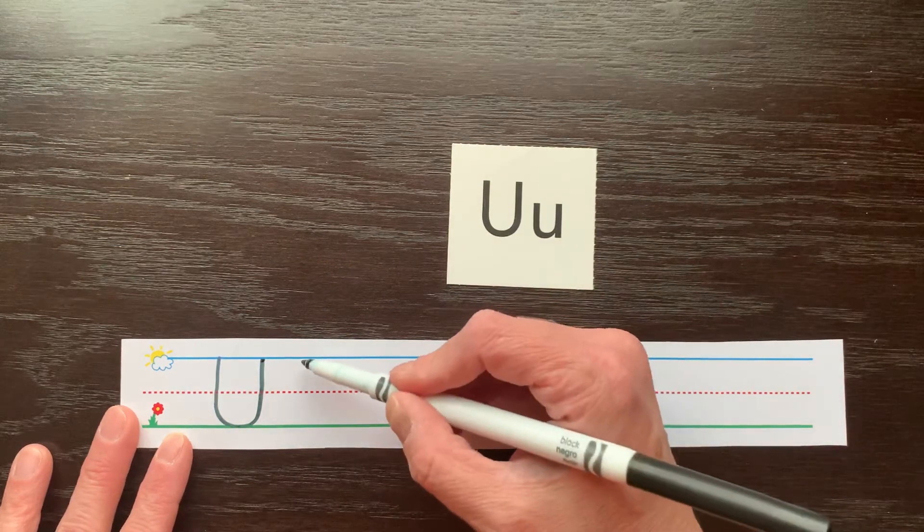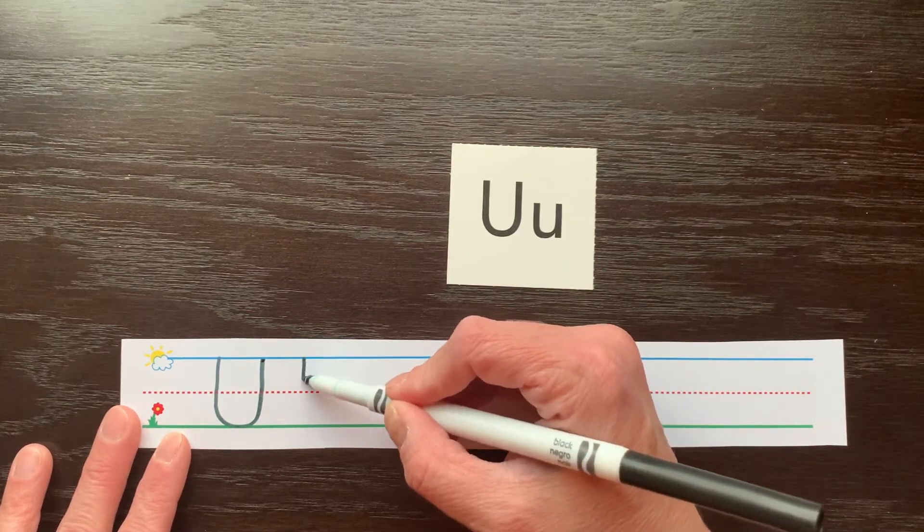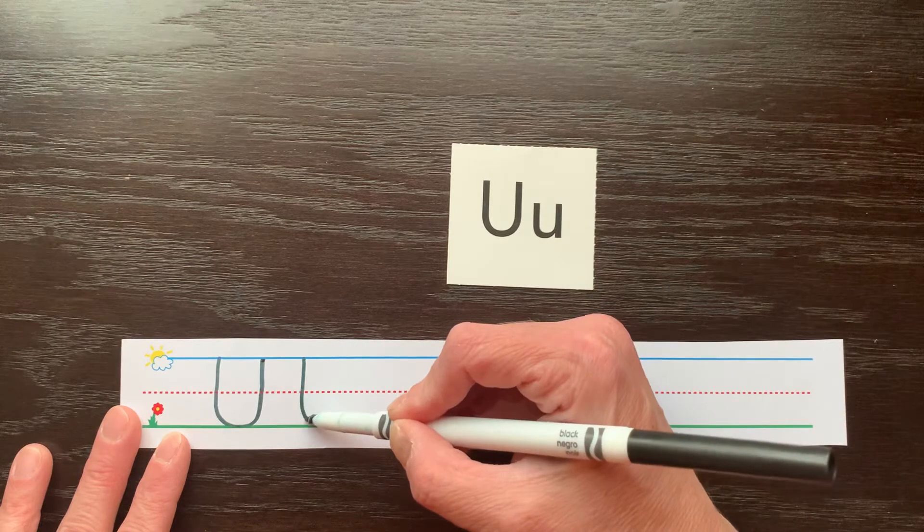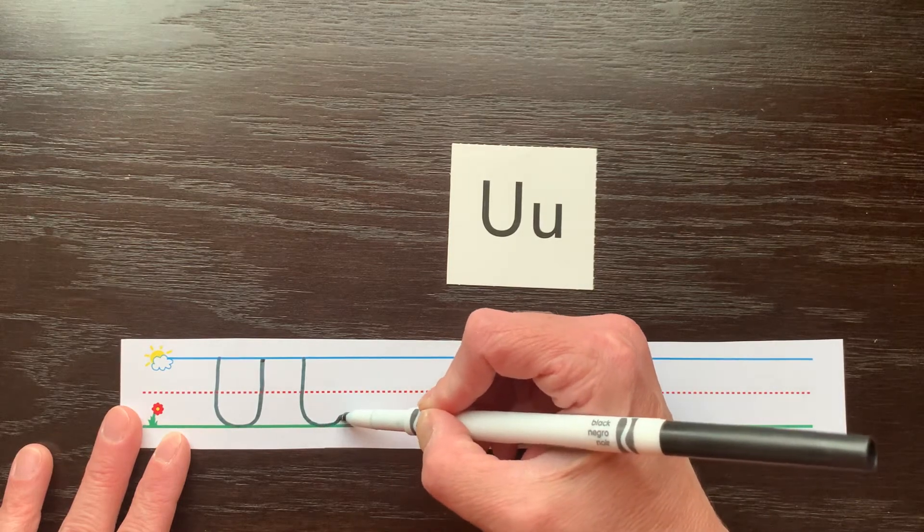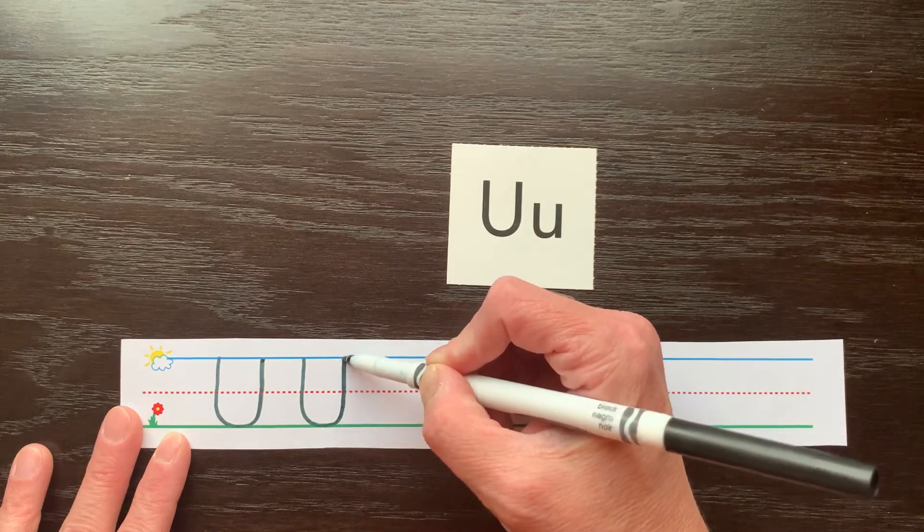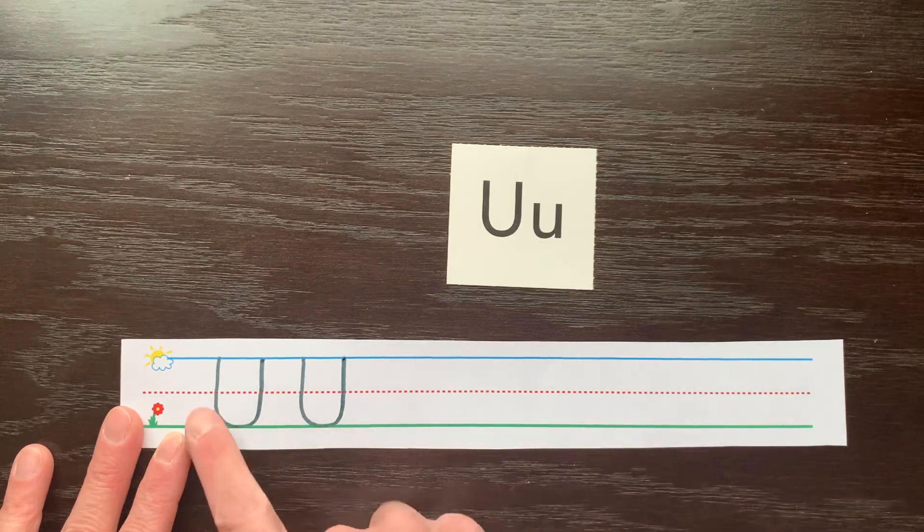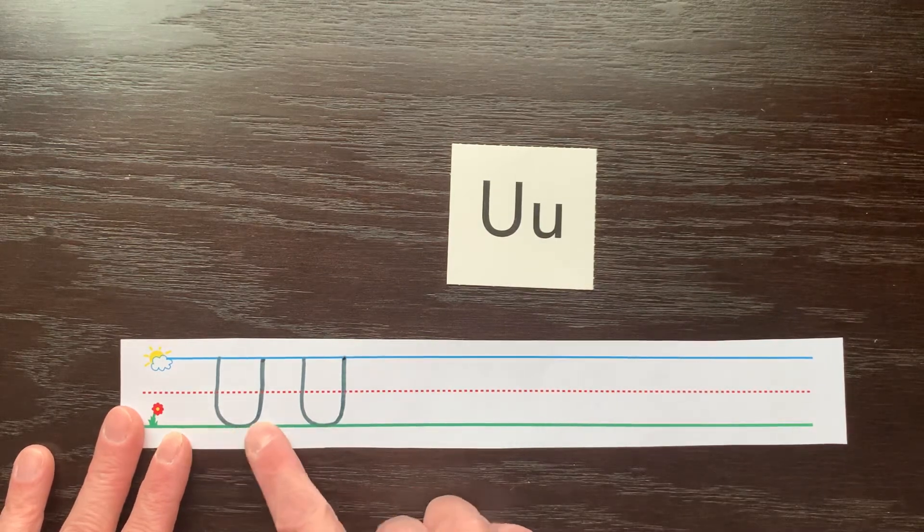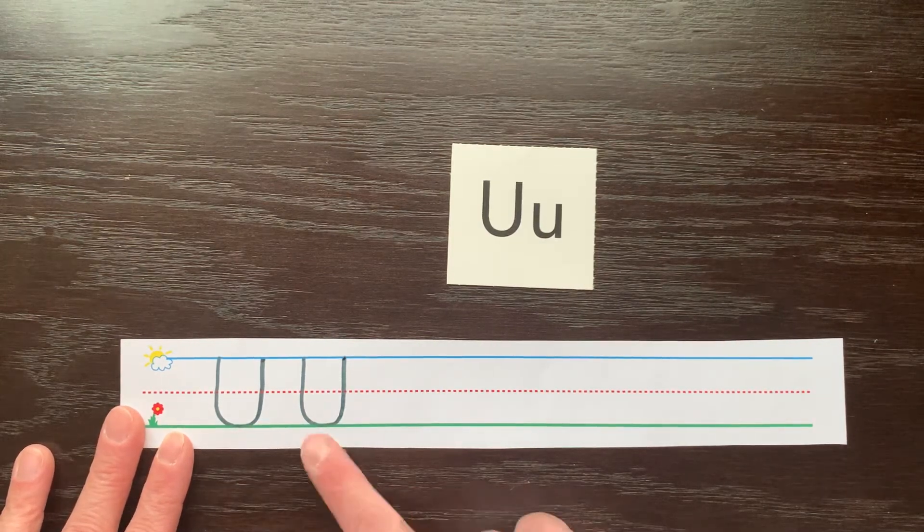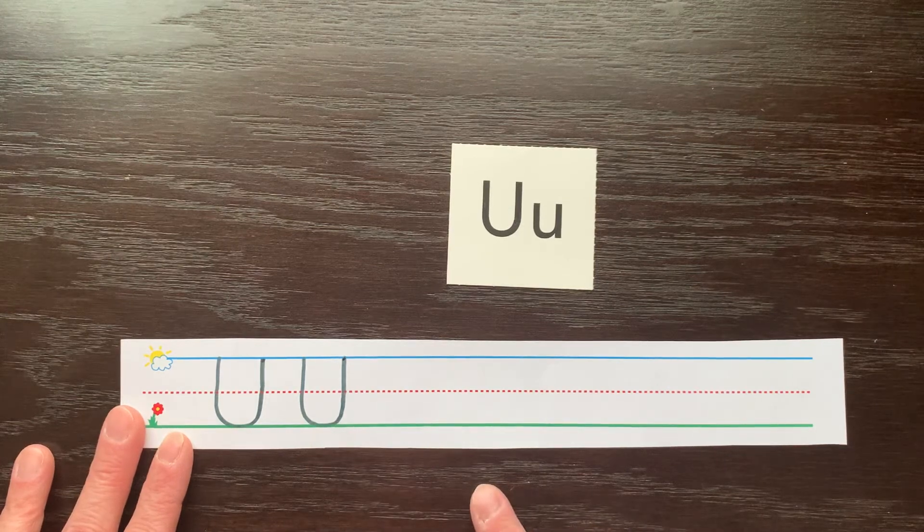Let's try that again. Start at the top, go down, down, down towards the ground, and curve, touch the ground, and then back up. Make sure it's nice and round on the bottom and not pointy because that will look like the letter V, which is a different letter.